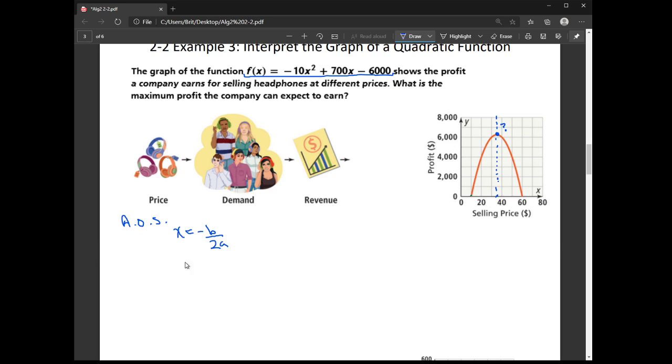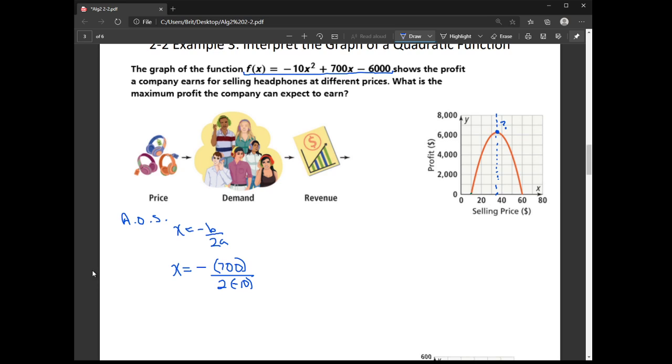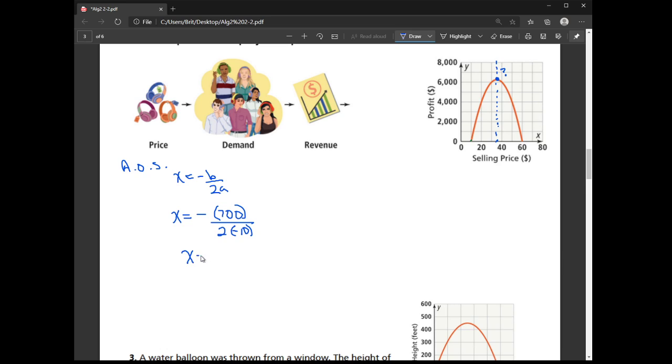So I need to start by plugging into this formula. So I have negative B, okay, my B is 700 over 2 times A. My A here is negative 10. So here I have negative 700 over negative 20, which is 35.